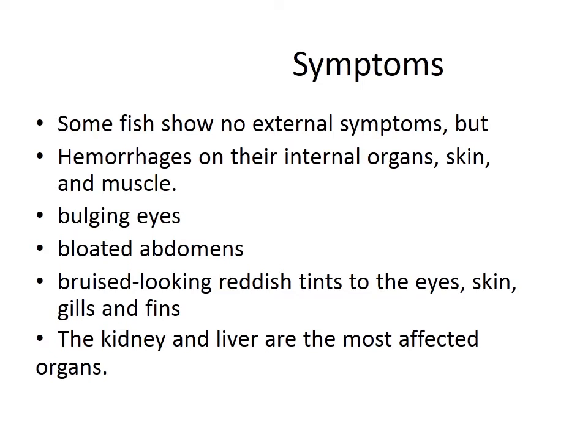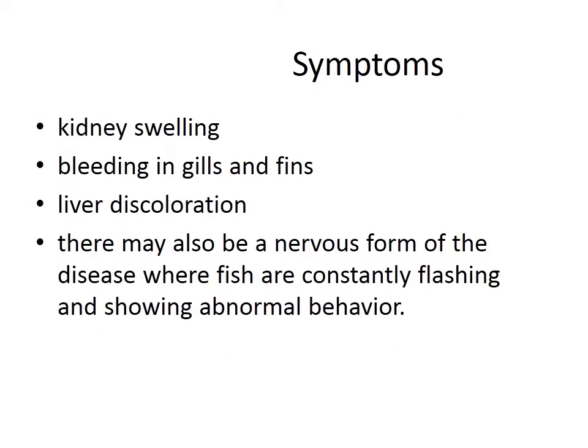Symptoms include reddish tints to the eyes, skin, gills, and fins. The kidney and liver are the most affected organs. Kidney swelling, bleeding in gills and fins, and liver discoloration occur. There may also be a nervous form of the disease where fish are constantly flashing and showing abnormal behavior.